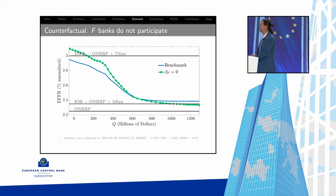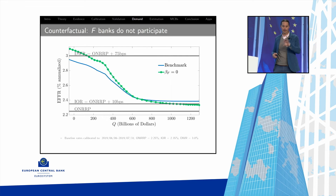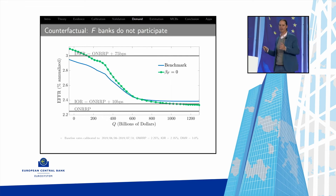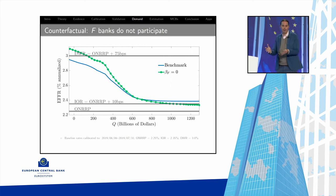Second counterfactual: we shut off the four fastest banks from trading for a day — they stay out, worried perhaps after seeing spikes in repo rates. The aggregate demand curve rotates and becomes steeper. The intuition is as before: we remove the fast banks with flatter marginal values, leaving only the banks with steeper ones, so the aggregate demand steepens.